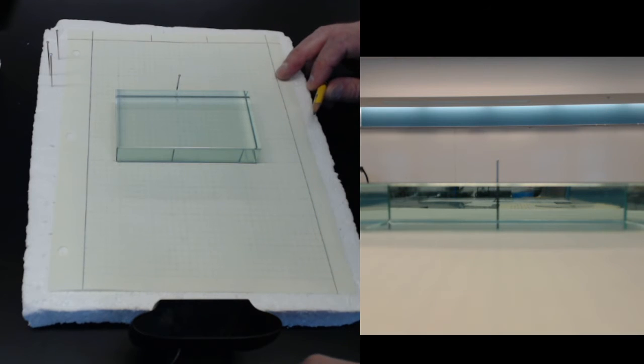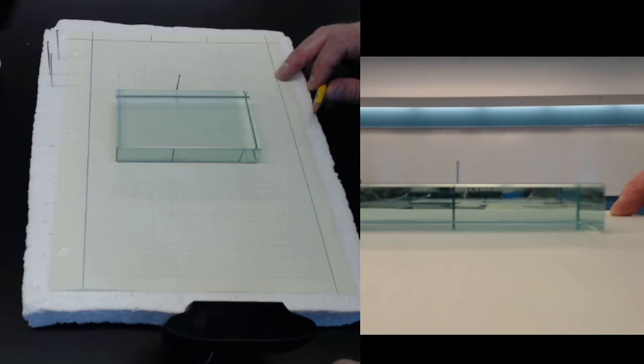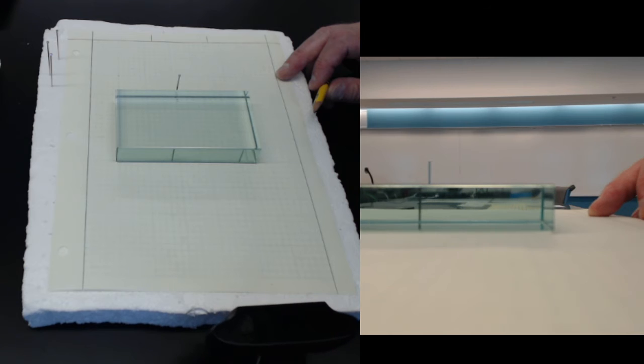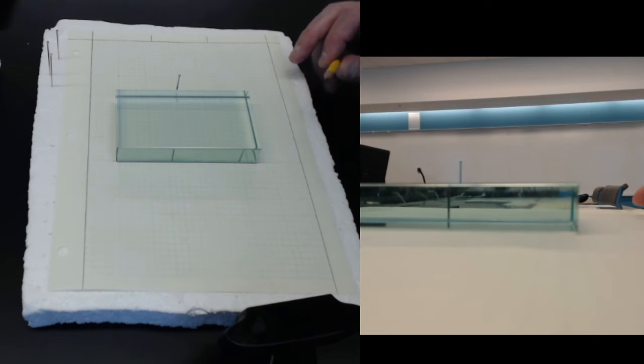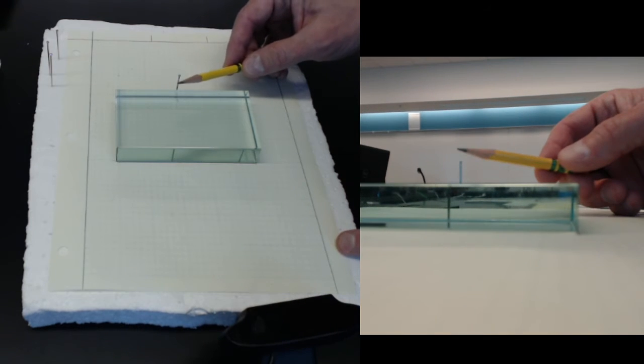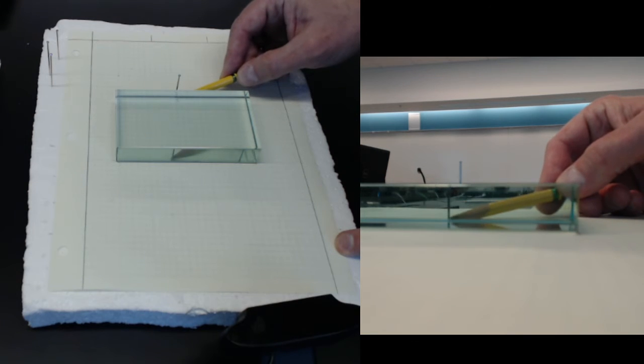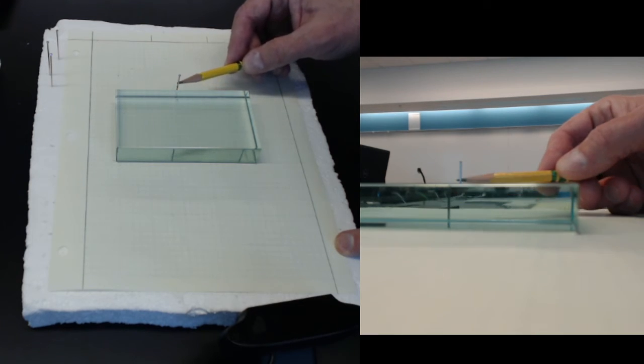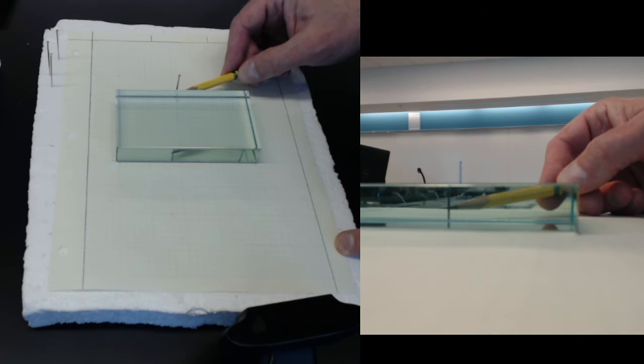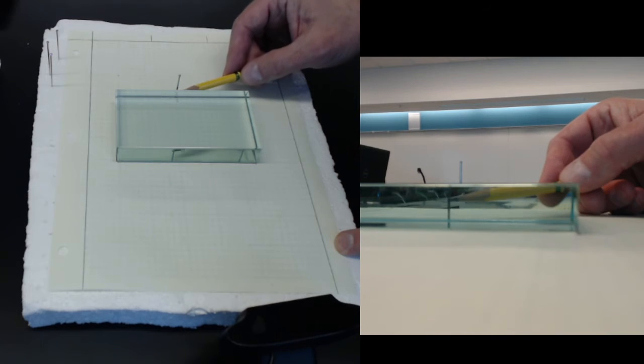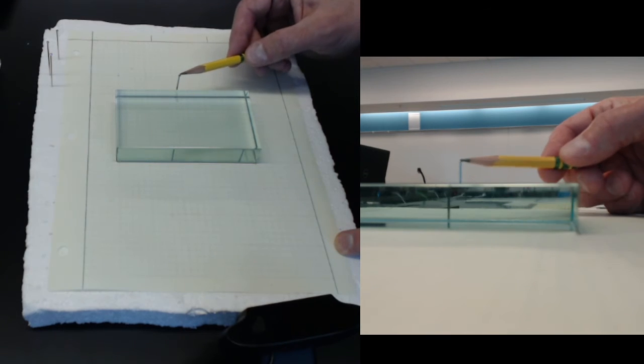But now if I move off to the side, look what happens. The top of the pin is here and the body you can see is here, and there's a disconnect because you're looking at the bottom, the body of the pin down here through the glass and it's traveling one path, and then you're looking at the top and it's traveling straight through the air. Those are two different paths.